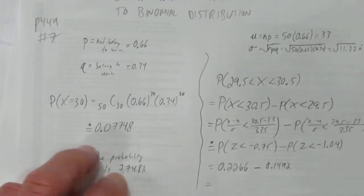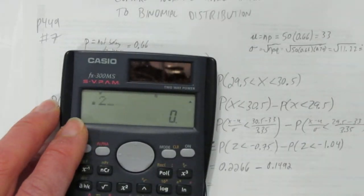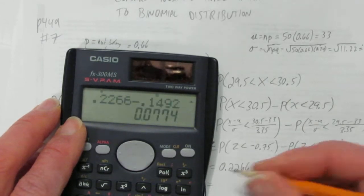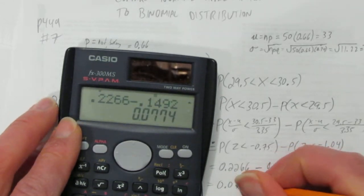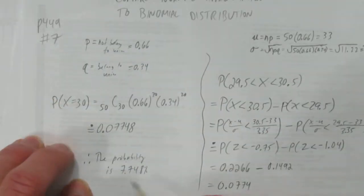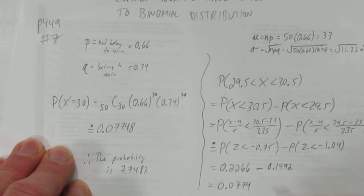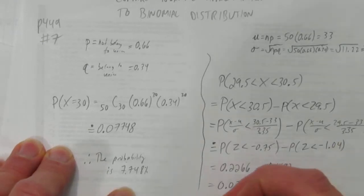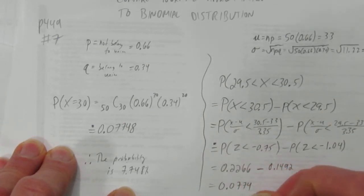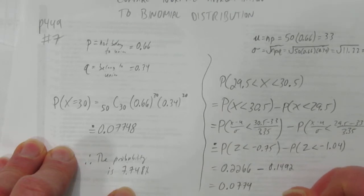And now just subtract. 0.2266 minus 0.1492. And you get 0.0774. And look at that. It's pretty much the same. We got 7.748. This just had less decimals. It was less accurate, but still highly accurate. And so we can conclude the normal approximation is accurate.